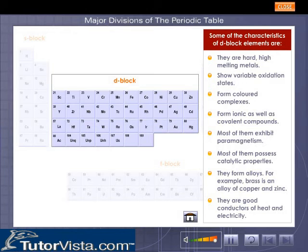Some of the characteristics of D-Block Elements are: They are hard, high melting metals, show variable oxidation states, form colored complexes, form ionic as well as covalent compounds. Most of them exhibit paramagnetism. Most of them possess catalytic properties.